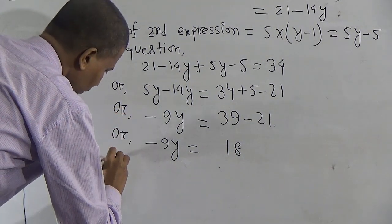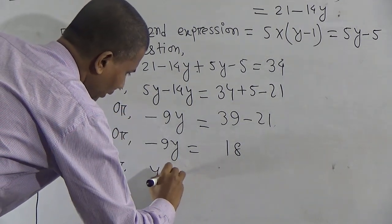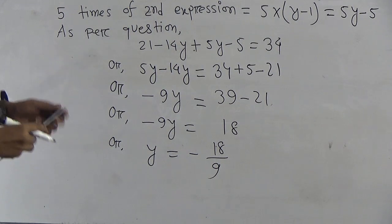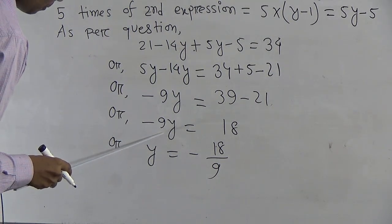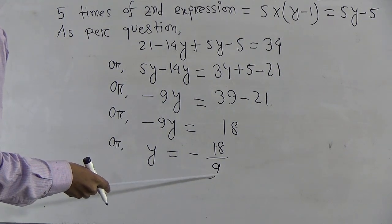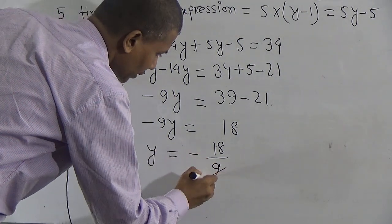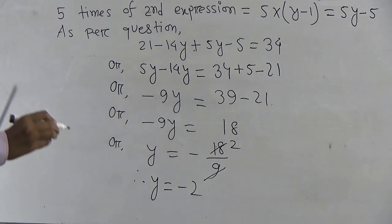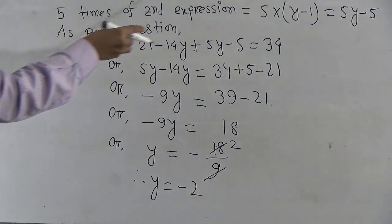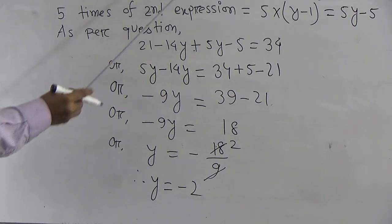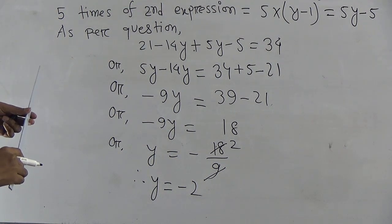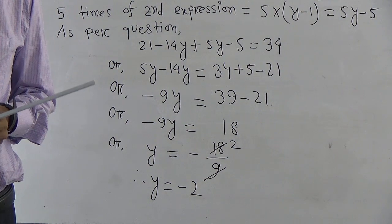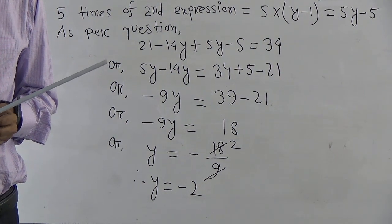Since the relation between 9 and y is multiplication, we divide both sides. y equals 18 by 9. Reducing, we get 2. That means y equals minus 2. So we have determined the value of y, which equals minus 2. Hope you understood our today's lesson. Stay healthy, take care, and eat a balanced diet. See you again.